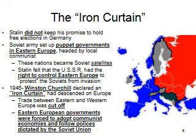The two sides were becoming unrecognizable to one another. Trade between Eastern and Western Europe was cut off, and these Eastern European satellite states were forced to adopt communist economies and follow policies dictated by the Soviet Union — economies where the government controls all aspects of production, the abolition of private property, control of the press — all of these things were adopted in the Eastern European satellite states.